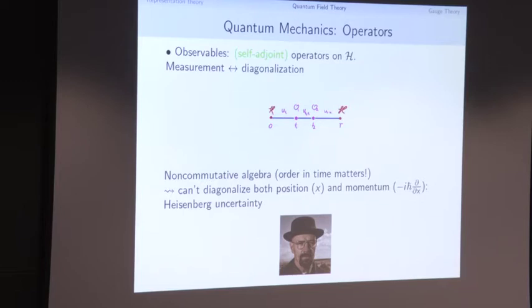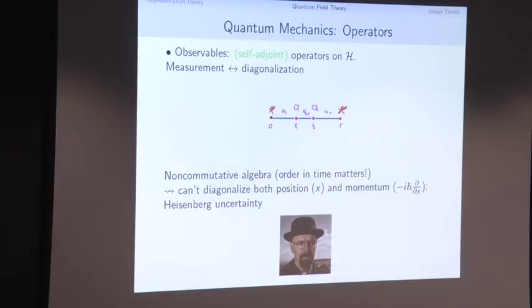When you write this down, this becomes the Heisenberg uncertainty principle: we can't know position and momentum precisely at the same time. So one of the big themes of quantum mechanics is this non-commutativity. Now that we've mastered quantum mechanics, here's a caricature of quantum field theory, in the way I've learned from ideas of Graeme Segal and others.